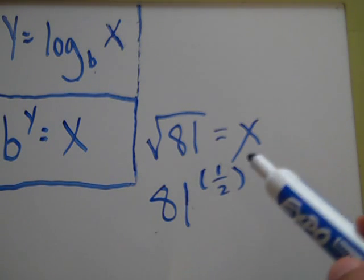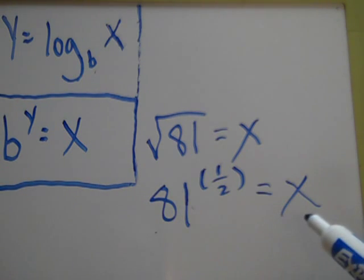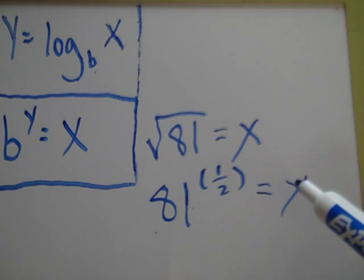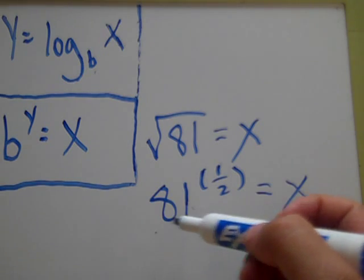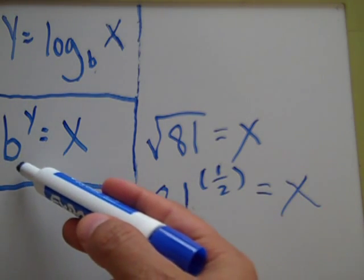So now you got an exponent. So you can rewrite this as this: 81 to the one half power equals x. Now they're going to want that in a logarithm form. Well, it's pretty simple. All you're doing now is plugging numbers in. In this form right here, it's an exponential form.